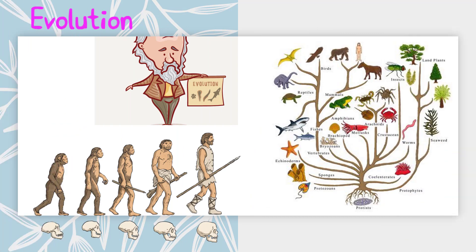The term evolution refers to the mechanism that produces the morphological change implied by limited common descent, or descent with modification through successive generations. Evolution in this sense refers chiefly to the mechanism of natural selection acting on random genetic variation or mutations. The theory of evolution by natural selection is a theory about the mechanism by which evolution occurred in the past and is still occurring now. The basic theory was developed by both Darwin and Wallace.